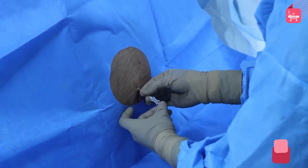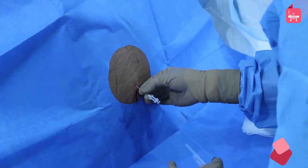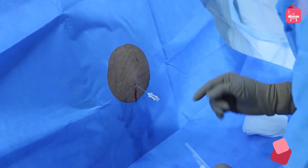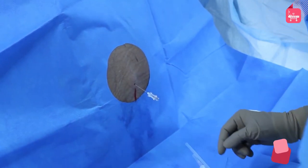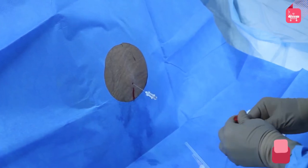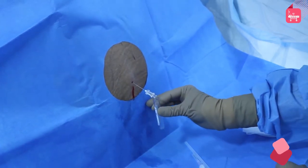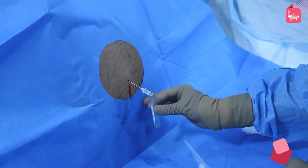After the removal of the stylet from the spinal needle, a few drops of cerebrospinal fluid, or CSF, are observed. After that, discard the first three drops. Then collect the CSF in the appropriate vials.